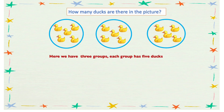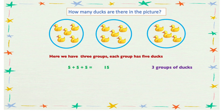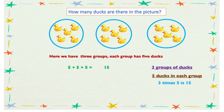Here we have three groups of ducks and in each group we have five ducks. So we can do 5 plus 5 plus 5 and this will give us 15. But we are repeatedly adding five, so we can do this in an easier way using multiplication. We have three groups of ducks times five ducks in each group, and this will give us 15 ducks all together.